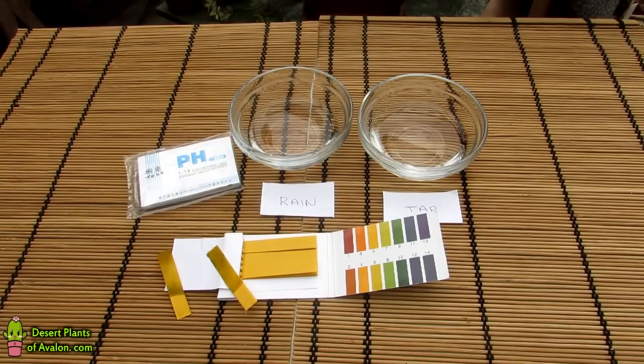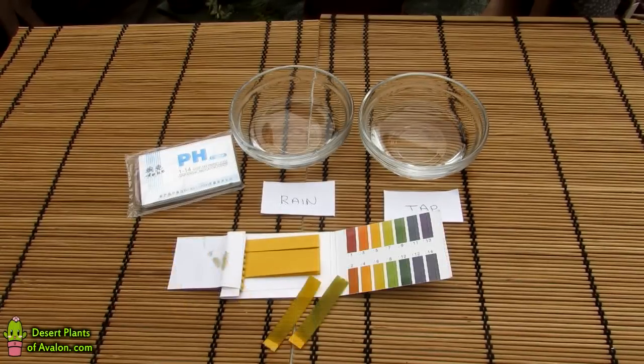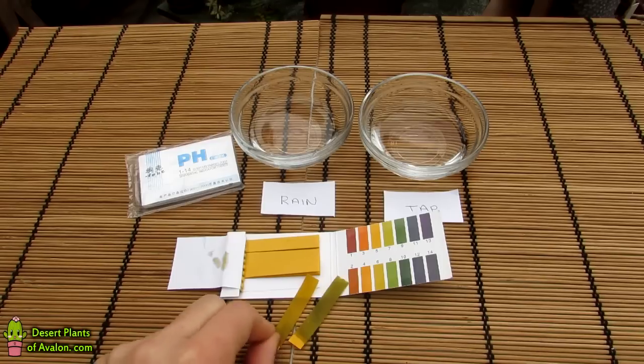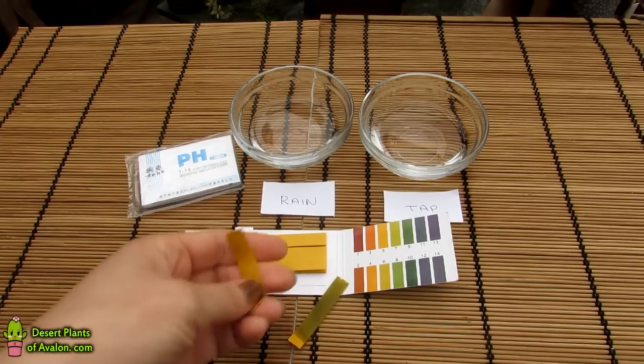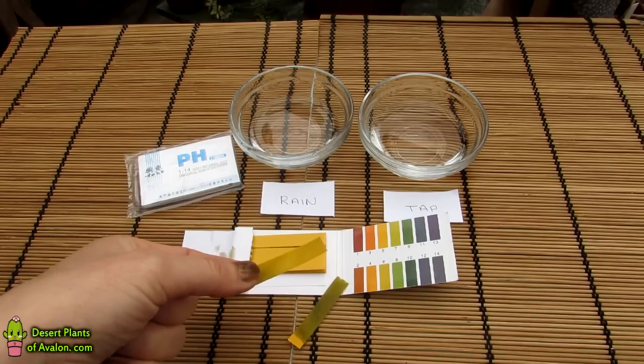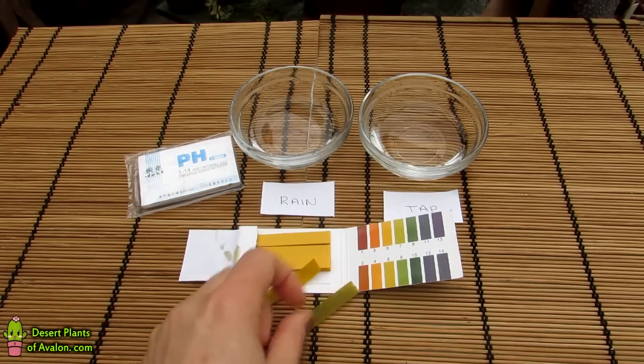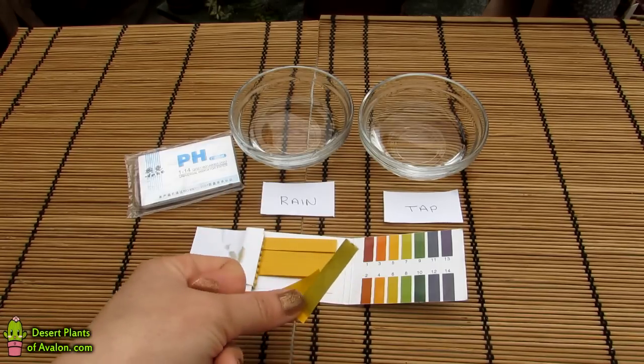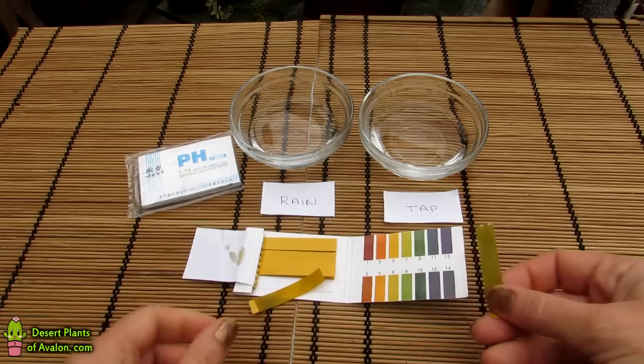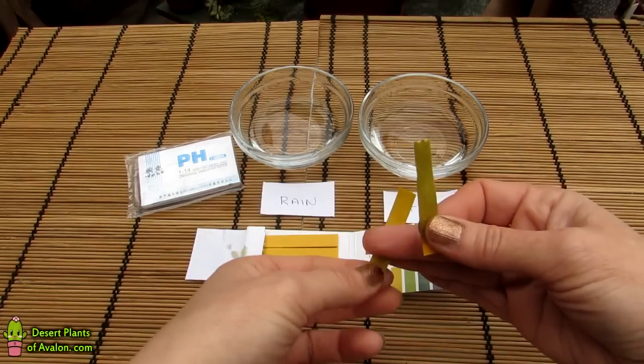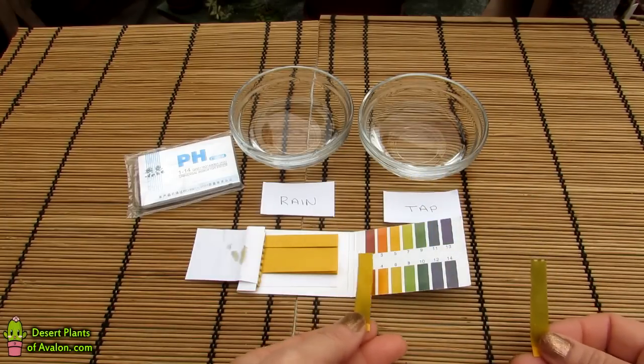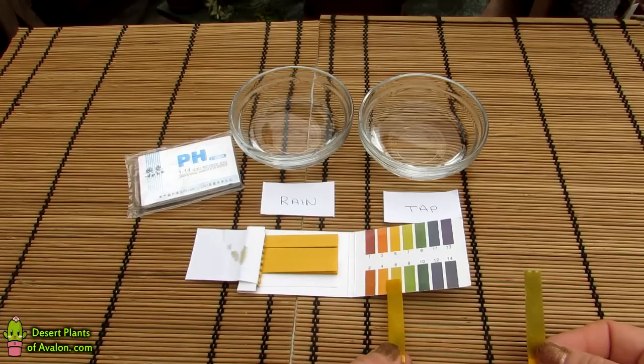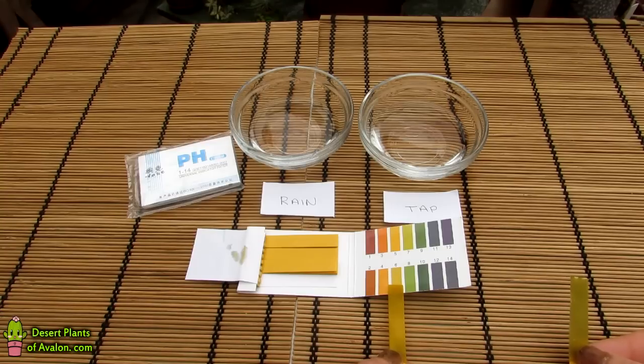I've left that two minutes, and as you can see, the difference in the two strips is amazing. This was the rainwater, and it's a very pale lime green. This one here is the tap water, and that's a darker green. What you do with these pH strips is you literally test them against the indicator—very easy to do.